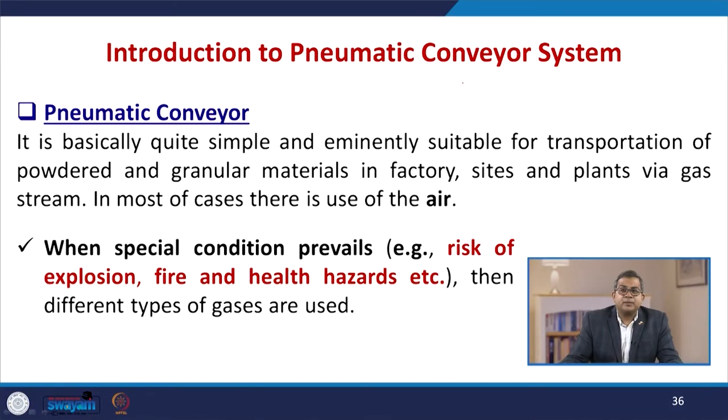Now let us talk about the introduction to the pneumatic conveying system. A pneumatic conveyor is basically simple and eminently suitable for transportation of powdered and granular materials in any factory, industry, site, or plant via a gas stream. Mostly, we use air for conveying these things. When special conditions prevail — such as risk of explosion, fire, or health hazard — then you may use different types of gases. If air may become a contaminant to the system or create a health hazard, then different gases can be used.